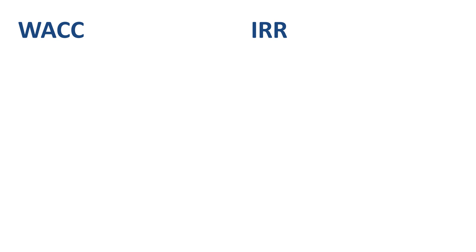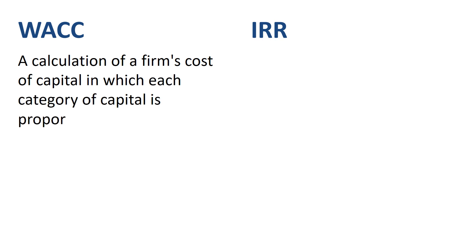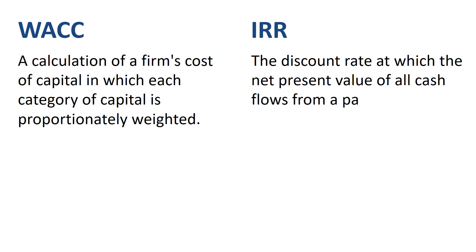The weighted average cost of capital is a calculation of a firm's cost of capital, in which each category of capital is proportionally weighted. The riskier or more uncertain the company, and the riskier or more uncertain the project, the higher the WACC. Internal rate of return is the discount rate at which the net present value of all cash flows from a particular project is equal to zero. Both the weighted average cost of capital and the internal rate of return are elements of the net present value calculation, but serve a different function.